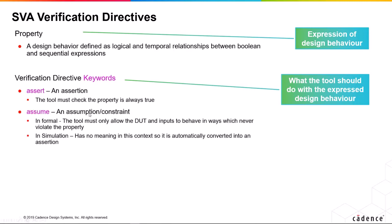An assumption is used in formal verification because with formal verification you don't have a test bench creating stimulus for you. The tool will drive the inputs in any way it wishes to try and cause an assertion to fail. Most designs aren't expected to work with random inputs, so there are rules about how the inputs behave, and we convey them to the tool by writing a property with the assume directive applied. In formal, it means a limitation on how inputs can be driven. Without any assumption, all inputs can change at any time to any value — equivalent to random inputs for infinity.